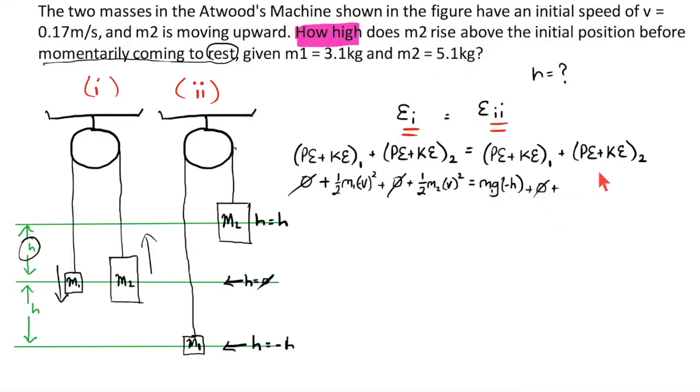On to object 2, his potential energy relative to where he started, m2g positive h. And his kinetic energy, momentarily coming to rest, 0.